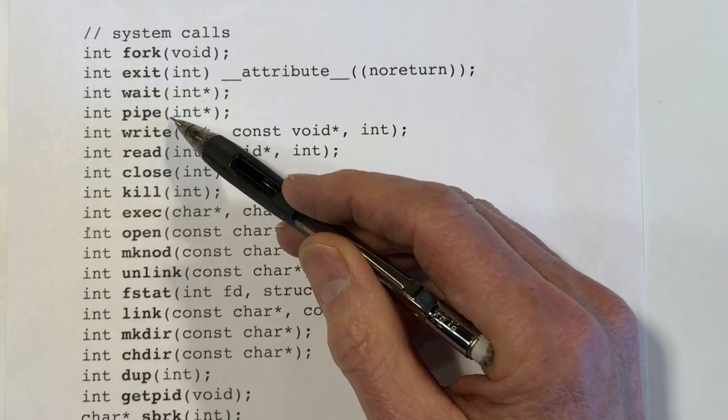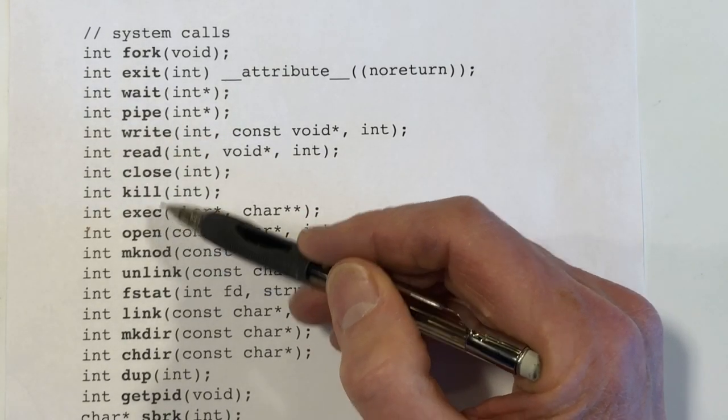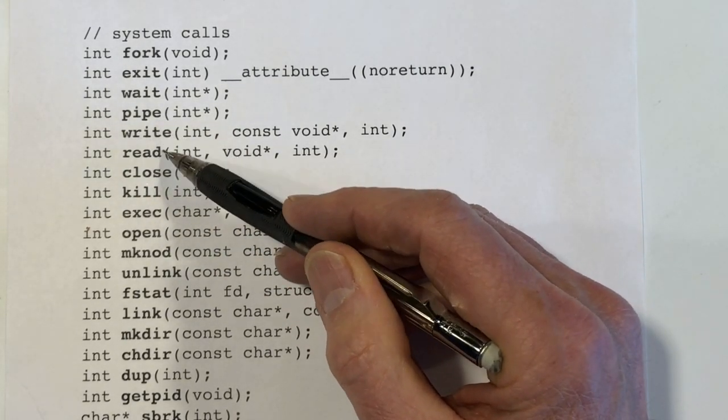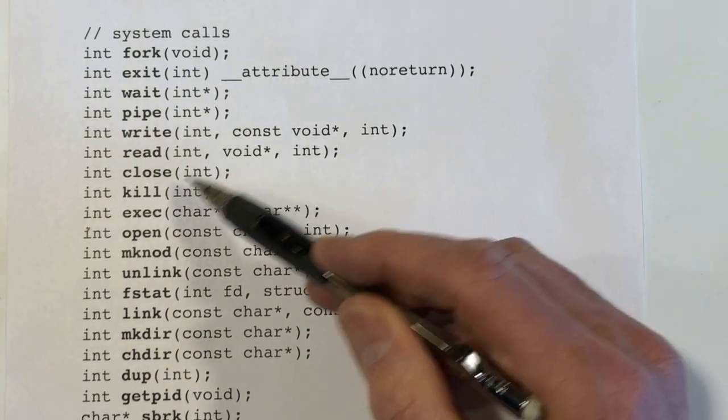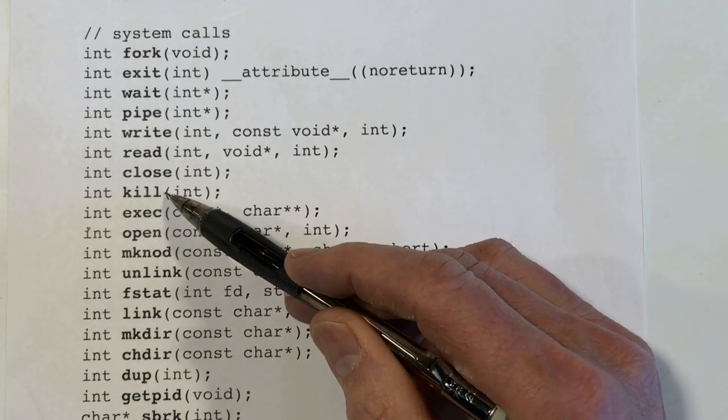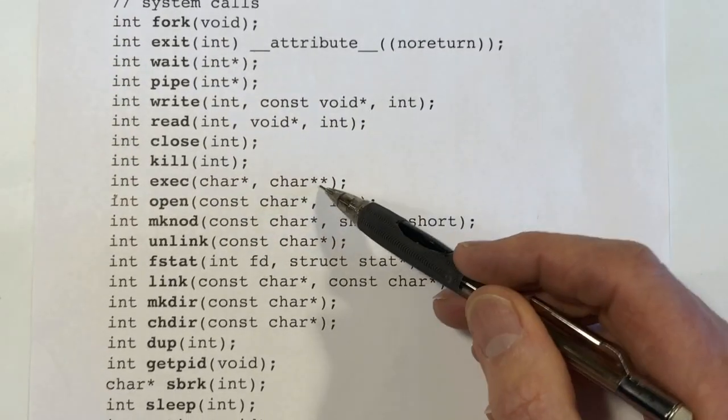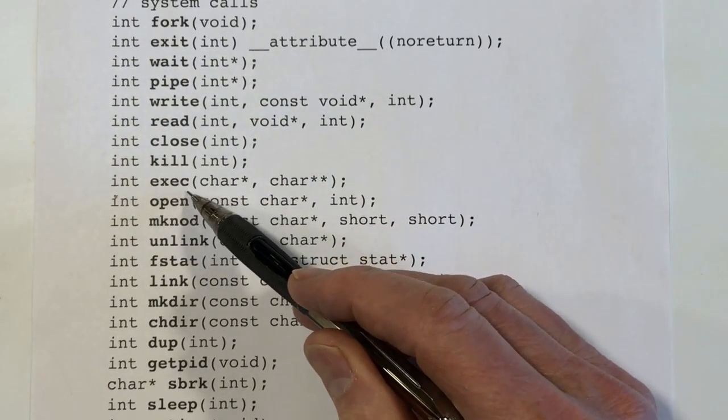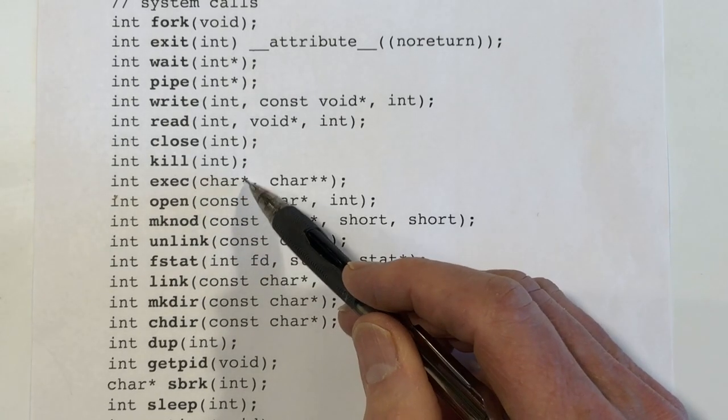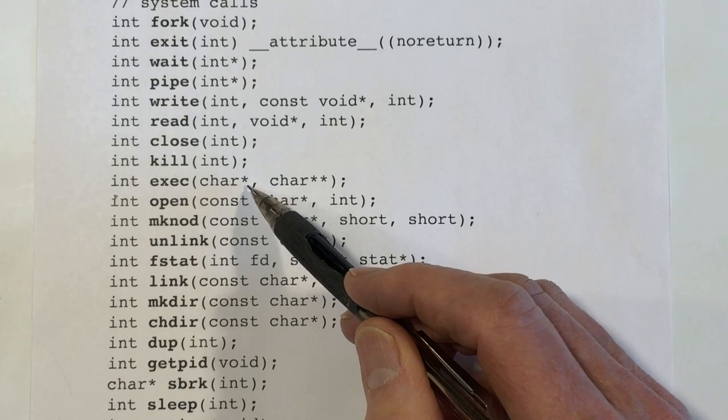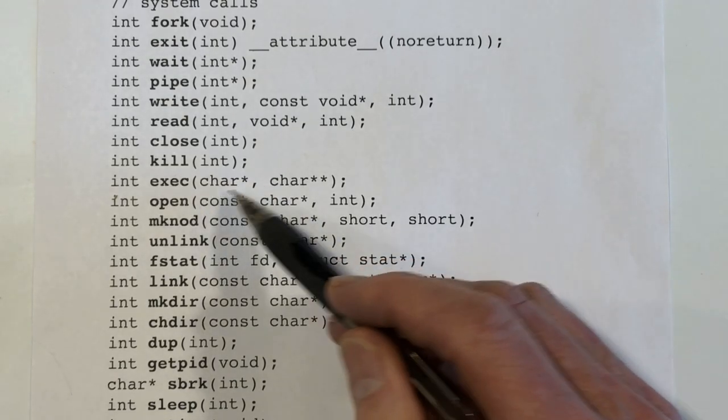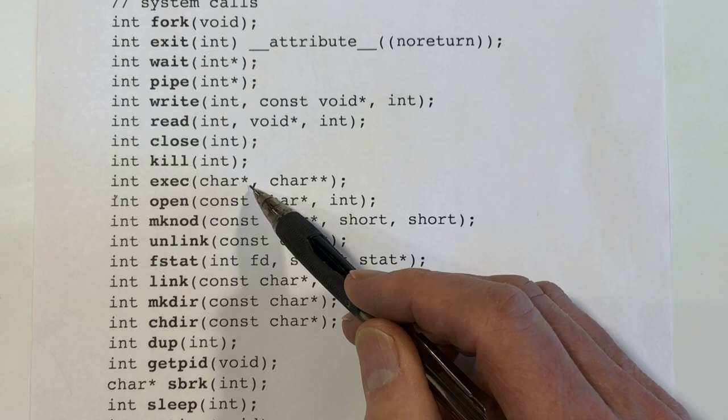Pipe is for creating pipes, and then we've got open, close, read, and write for dealing with files. We've got kill to terminate a process. We've got exec, which is passed a file name and will read in that file. Presumably it's an executable file and we'll load it into memory, creating a new virtual address space and execute it.